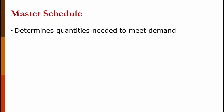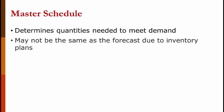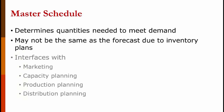The master schedule tells us period by period how much of each item we're going to make. This is not the same as the forecast for a lot of reasons. One, typically the forecast isn't that granular. Two, the forecast is demand, not production — we could be doing level production, for example, and not producing to the forecast. The master schedule interfaces with marketing, capacity planning, production planning, and distribution planning, all of them looking at it for different reasons.